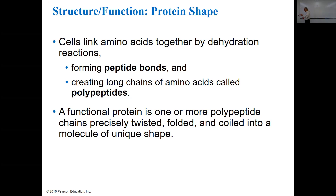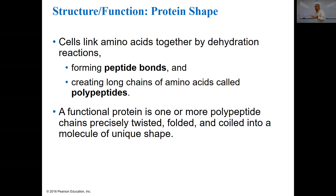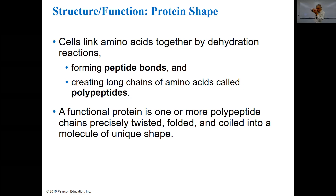A functional protein is one or more polypeptide chains precisely twisted and folded into a molecule of unique shape — that's the really important part. Proteins do their job because of their molecular shape. The three-dimensional shape is determined by what amino acids are put in what order. Proteins usually work by recognizing and binding to some other molecule, so they need complementary shapes to bind to that other molecule.